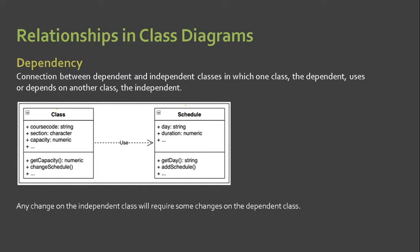Let's talk first about dependency. Dependency is used to describe the relationship between various elements and the class diagram that are dependent upon each other. By the word itself — dependent — basically, one class will not work without the other class.